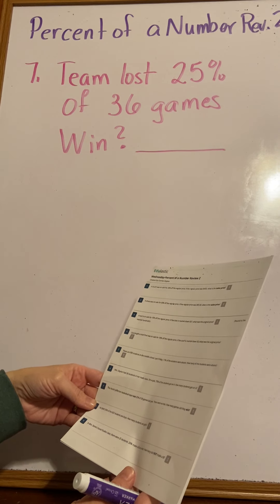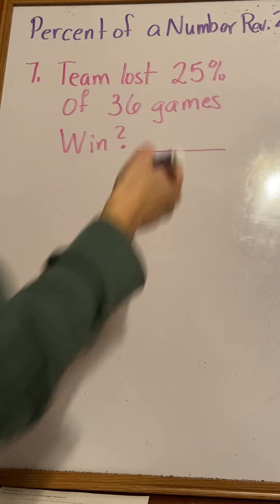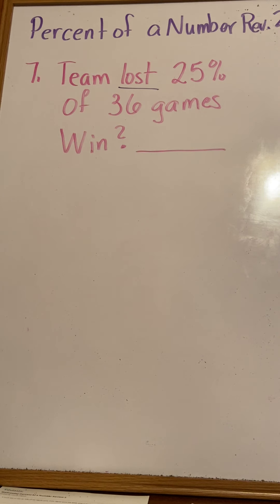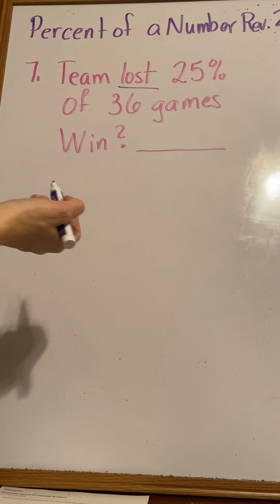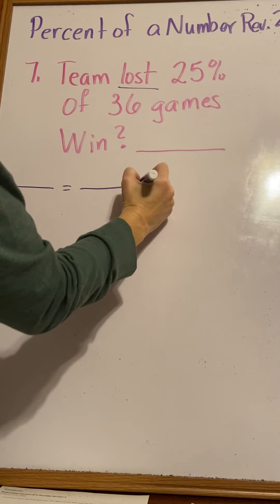This is kind of a switcheroo. They give us a percentage for how many games the team lost, but then at the end they ask us how many games the team won. There's a couple of different ways you can do this. I'm going to show you both ways.